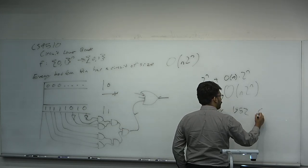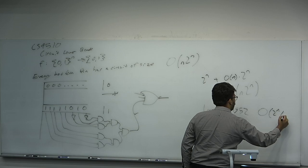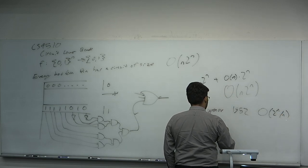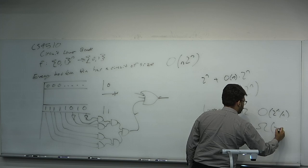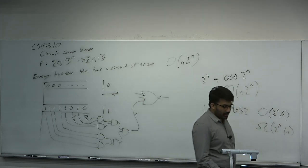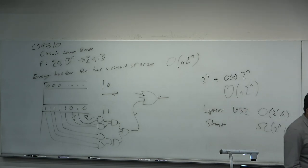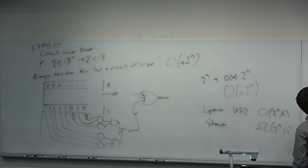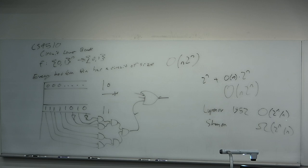We'll proceed with Shannon's proof by a counting argument. First, let's estimate how many Boolean circuits there are of size T. Then we'll replace T with 2^n / n and do our counting. How many Boolean circuits are there of size T? Let's just try to estimate that number.